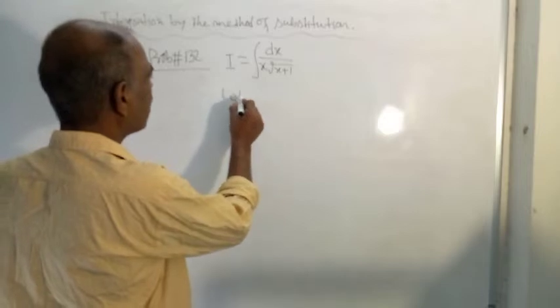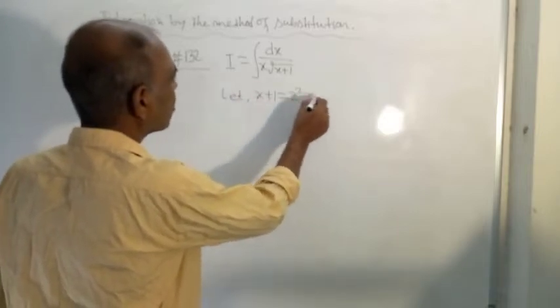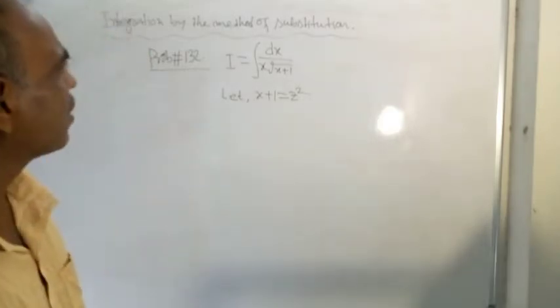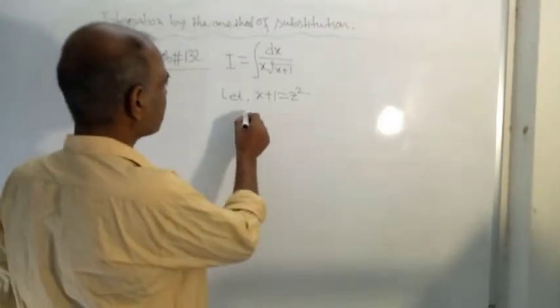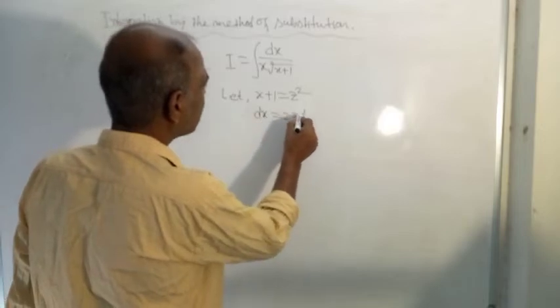To solve this problem, let x plus 1 equal z squared. Now differentiate both sides of this. Therefore, dx equals 2z dz.